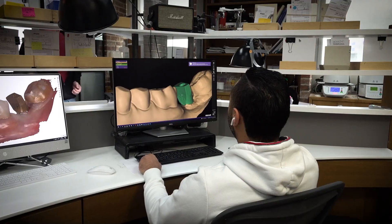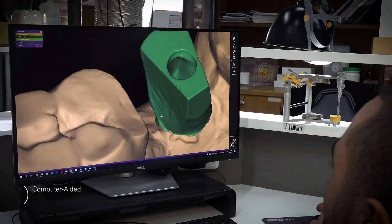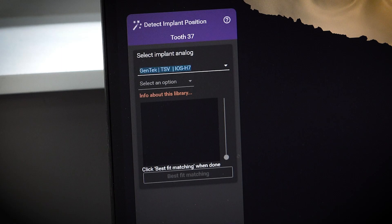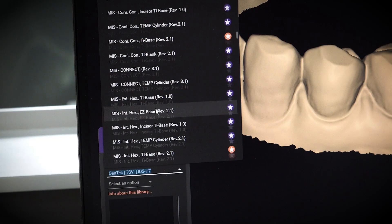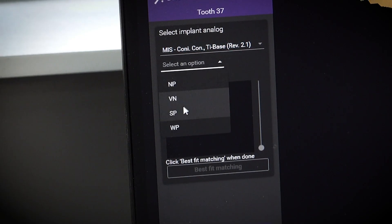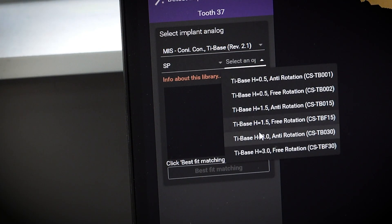The scan files are uploaded to the CAD software of your choice. In this video, the procedure is demonstrated using ExoCAD. Find the MIS library and choose the correct tie base by the following parameters: implant connection type, implant platform, and gingiva height.